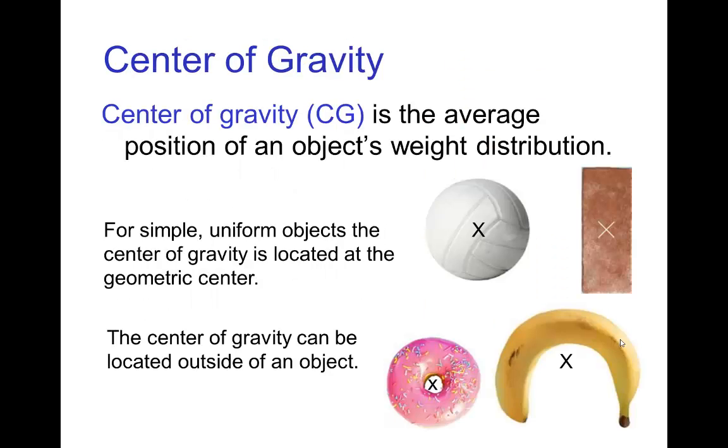So the first topic is the concept of center of gravity. The center of gravity is the average position of an object's weight distribution. For simple objects like a brick or a ball, it would be the geometric center. For more complicated objects it would be some average position. And in fact, the center of gravity can even be outside of the object.